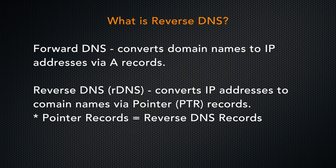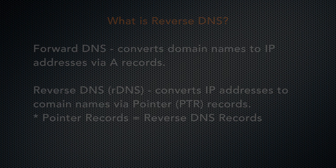Reverse DNS, or RDNS, uses pointer records to convert IP addresses to domain names. Pointer records are the opposite of A entries, since they point an IP address to a host name or domain. You might also hear pointer records referred to as reverse DNS records.